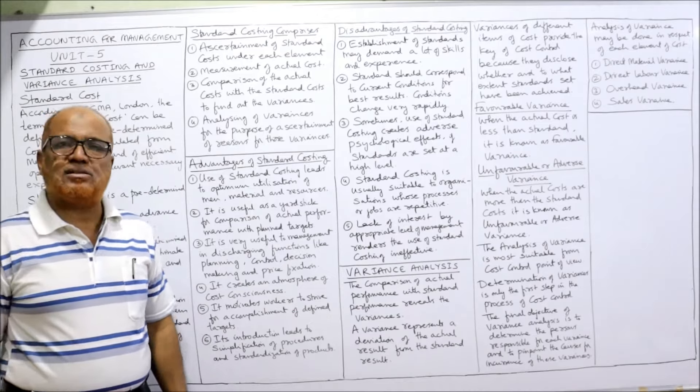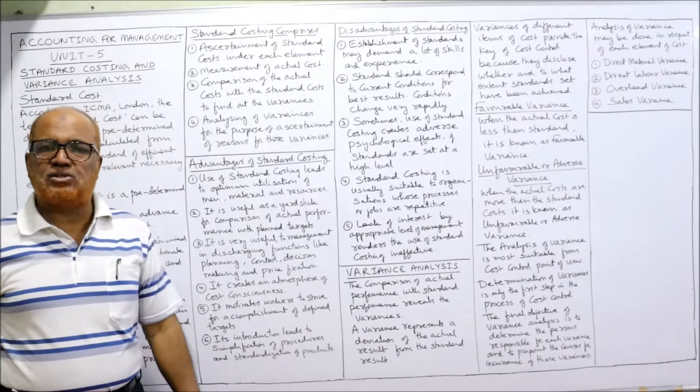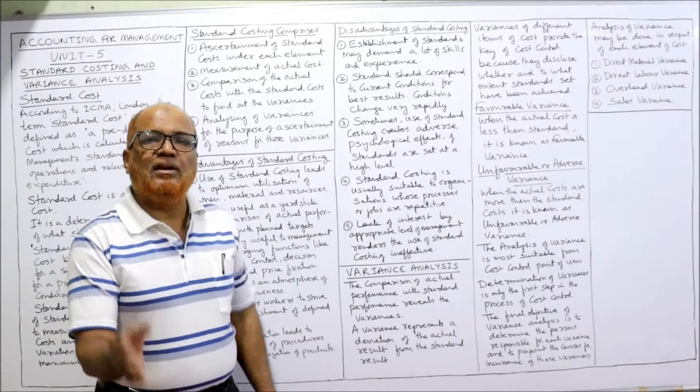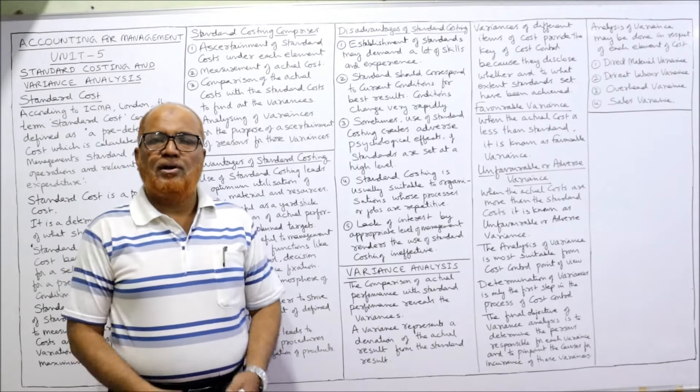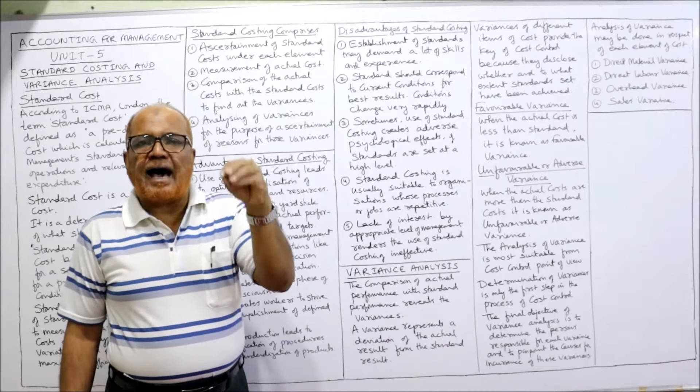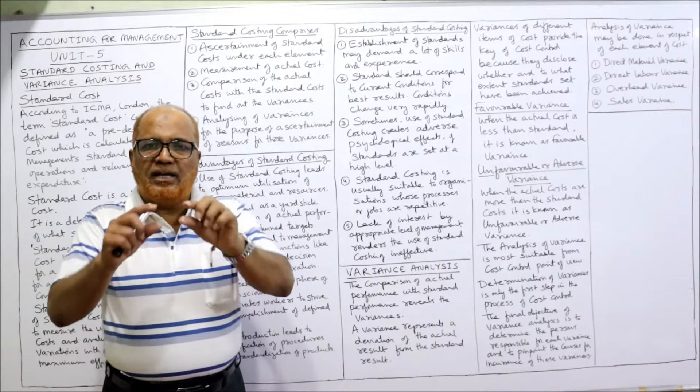Now I am going to explain variance and analysis of variance. The problems are based on this analysis of variance. Variance means deviation — the deviation of actual cost from the standard cost. For example, we estimated the standard cost to be five lakh rupees whereas actual cost is six lakh rupees. The difference between actual cost and standard cost is called variance, so one lakh rupees is the variance. By comparing the actual and standard we can find out the variance — seldom does it happen that both are the same.